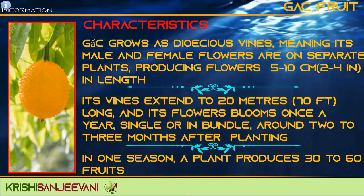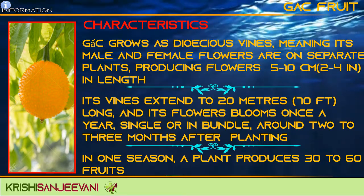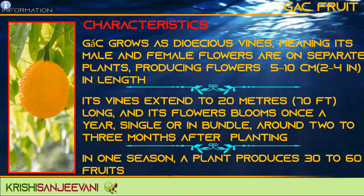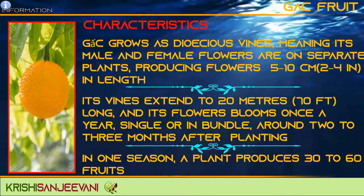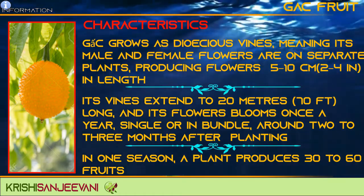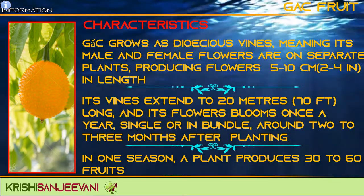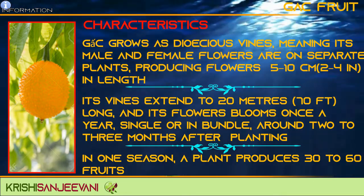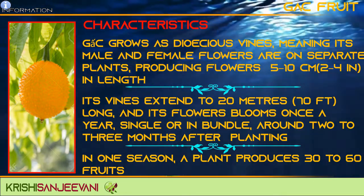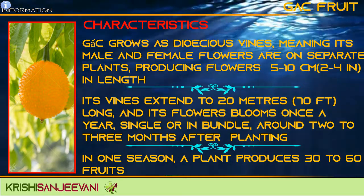Gac grows as dioecious vines, meaning its male and female flowers are on separate plants, producing flowers 5–10 cm in length. Its vines extend to 20 m long and its flowers bloom once a year, single or in bundles, around 2–3 months after planting.